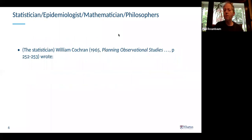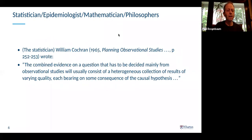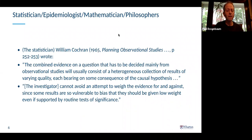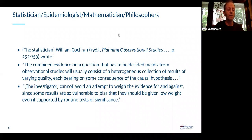I want to quote from a statistician, an epidemiologist, a mathematician, and two philosophers. William Cochran wrote that evidence on a question decided mainly from observational studies will consist of a heterogeneous collection of results of varying quality, each bearing on some consequence of the causal hypothesis. The investigator cannot avoid weighing evidence for and against, since some results are so vulnerable to bias they should be given low weight even if supported by routine tests of significance. Just looking at p-values isn't going to help us sort this out.